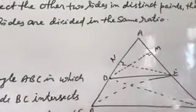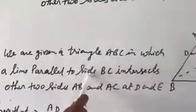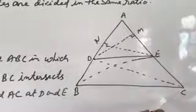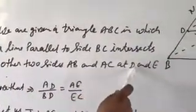given a triangle ABC in which a line parallel to side BC intersects the other two sides AB and AC at D and E.